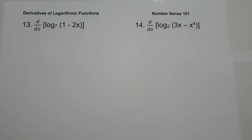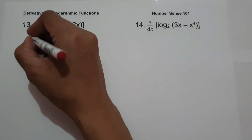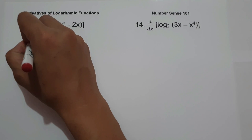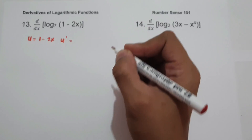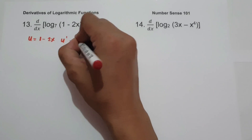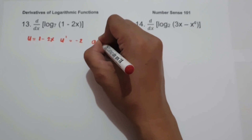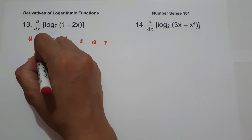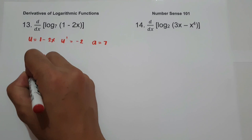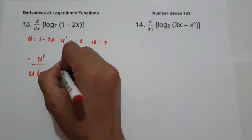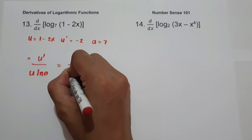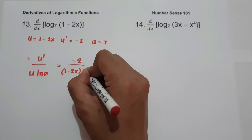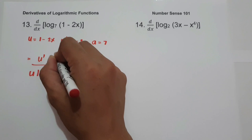Number thirteen: derivative of log base 7 of (1 − 2x). Let u = 1 − 2x, u' = −2, and a = 7. Applying the formula gives −2 over ((1 − 2x) · ln 7). This will be our answer.